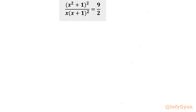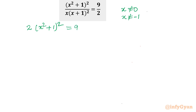So x cannot be 0 and x cannot be negative 1, because that will make the denominator 0, so it would not be in the domain. Now I will cross multiply the terms, so I will write 2 times (x² + 1)² equal to 9 times x(x + 1)².